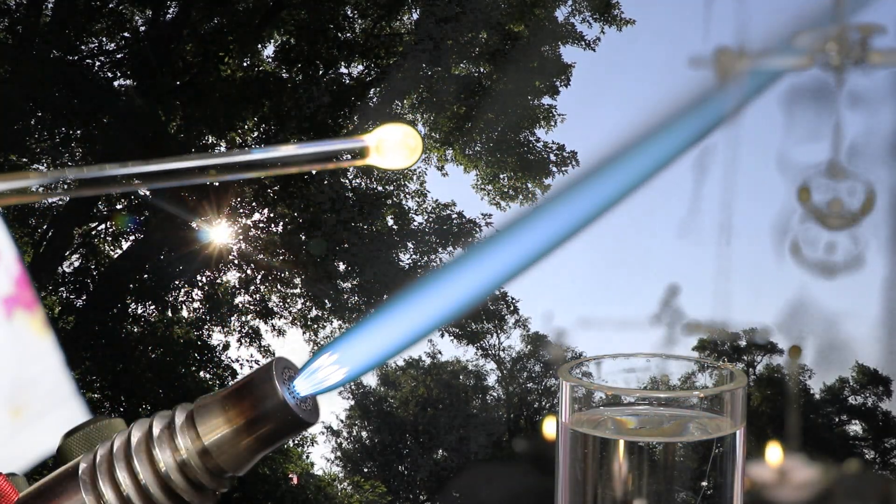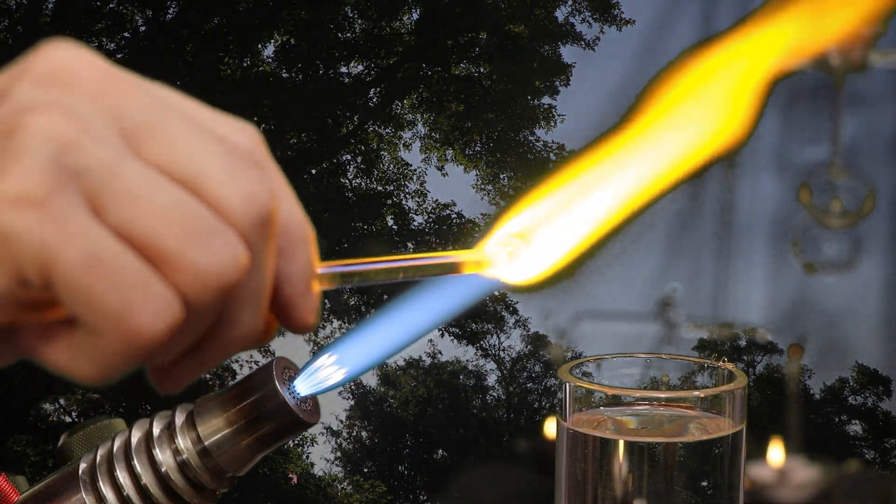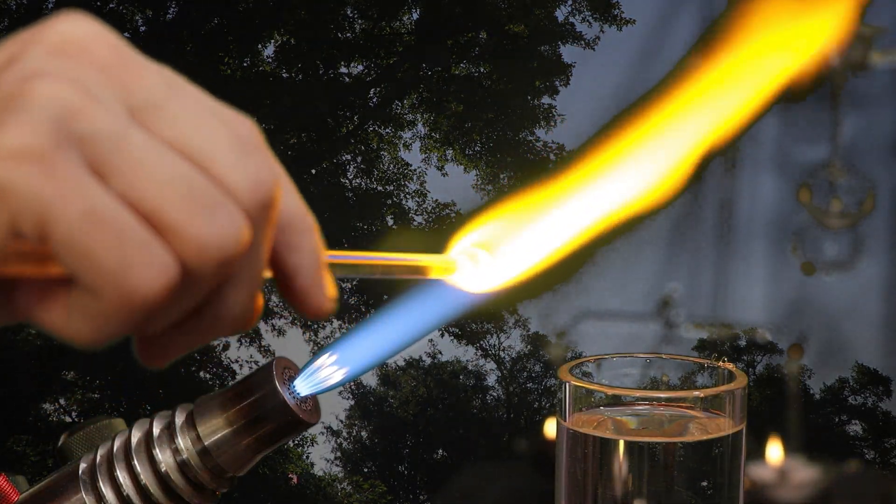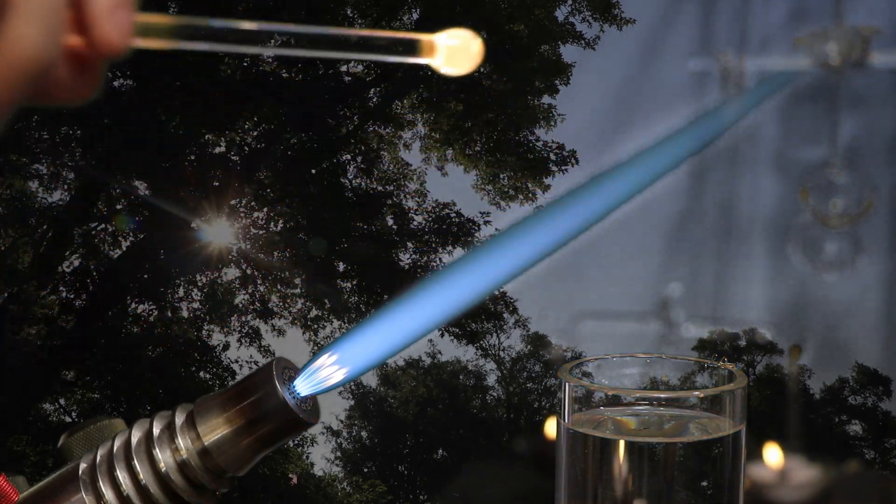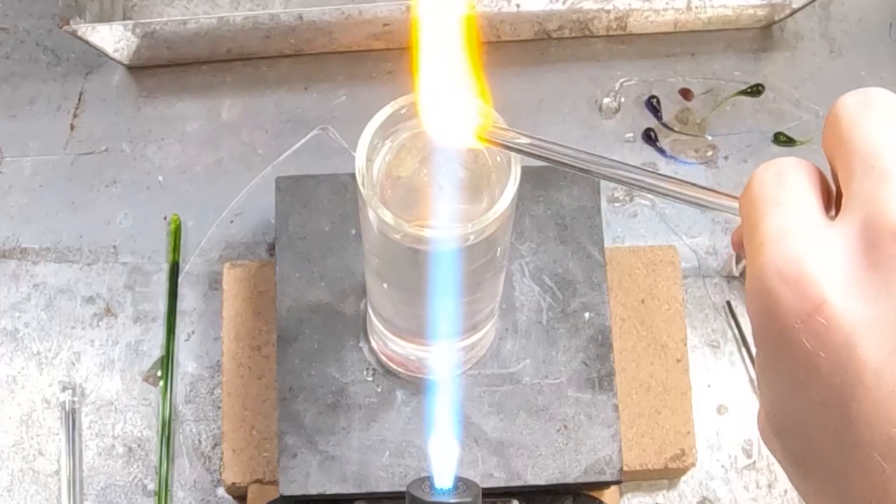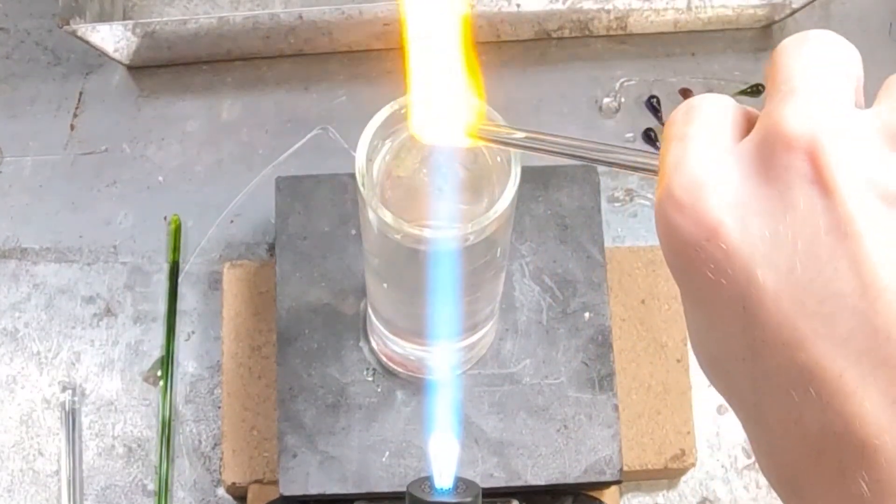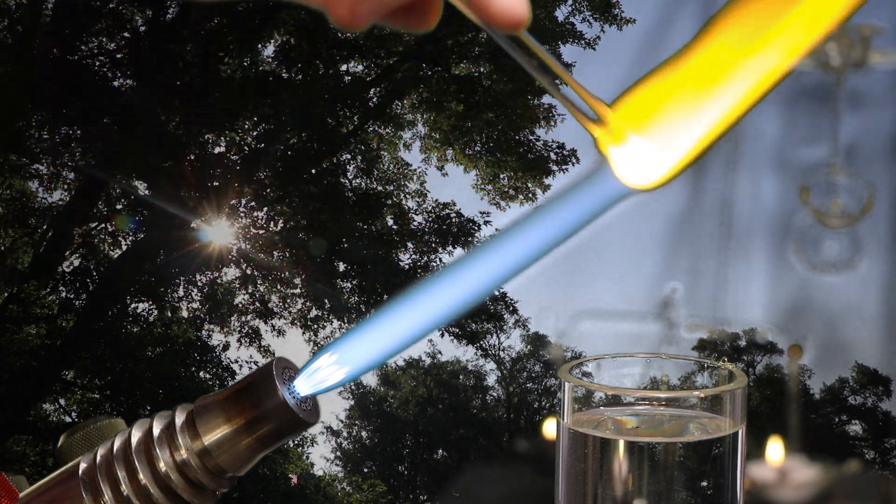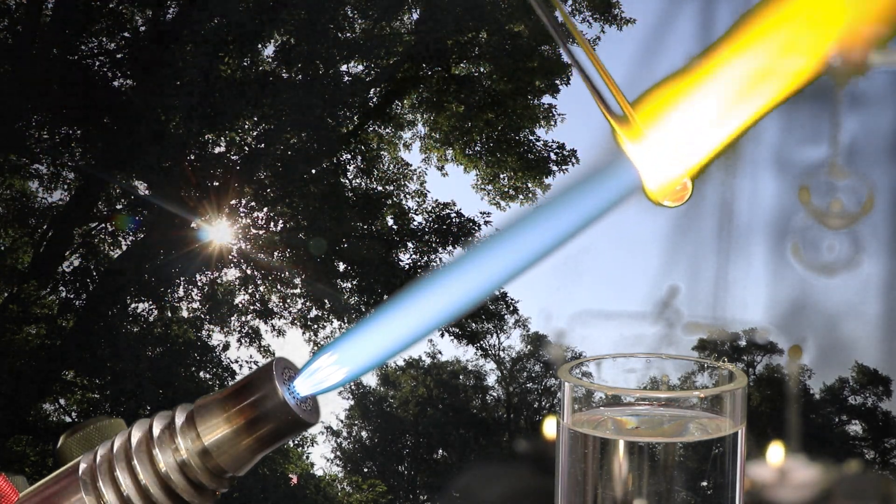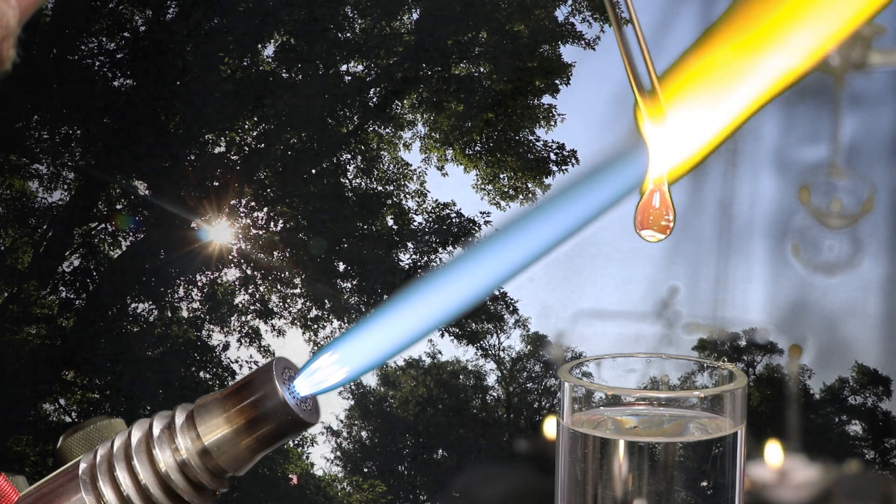Sometimes when we work on larger projects, we have to keep reheating the entire piece again and again, just to keep it from getting to that cracking point. And so instead of just melting the glass off the rod, I gathered up a bit of glass there to make a larger droplet. And my biggest focus is just keeping an even heat all the way around. I don't want one side too hot or the center too cold.